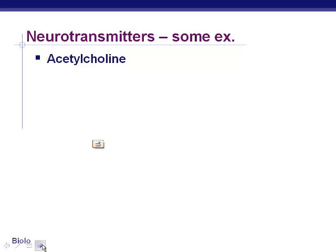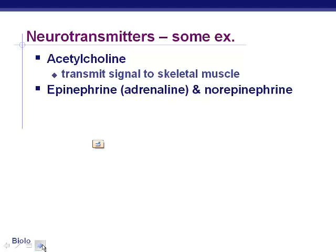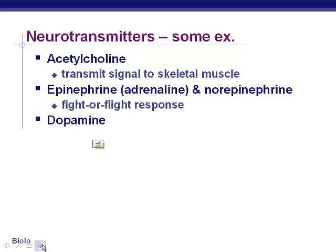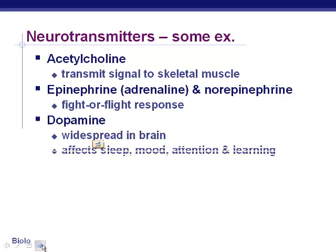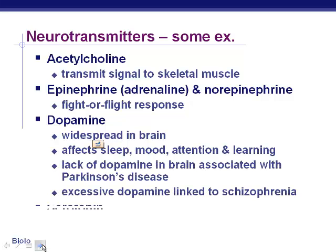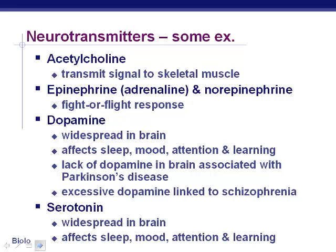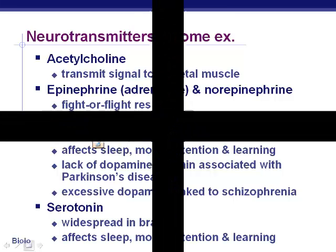Here are some examples of neurotransmitters: acetylcholine stimulates skeletal muscle to work; epinephrine and norepinephrine inhibit or excite the fight-or-flight response; dopamine, found in the brain, is involved in sleep, mood, attention, and learning; and serotonin is involved in sleep as well. We'll be going over this in more detail next class.